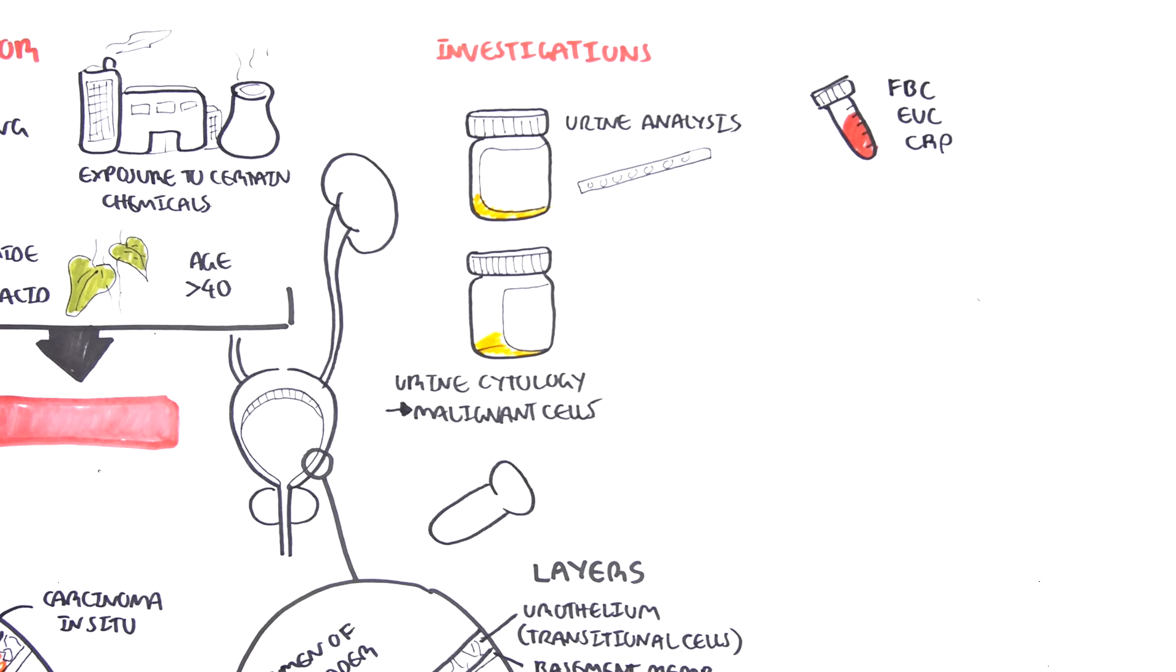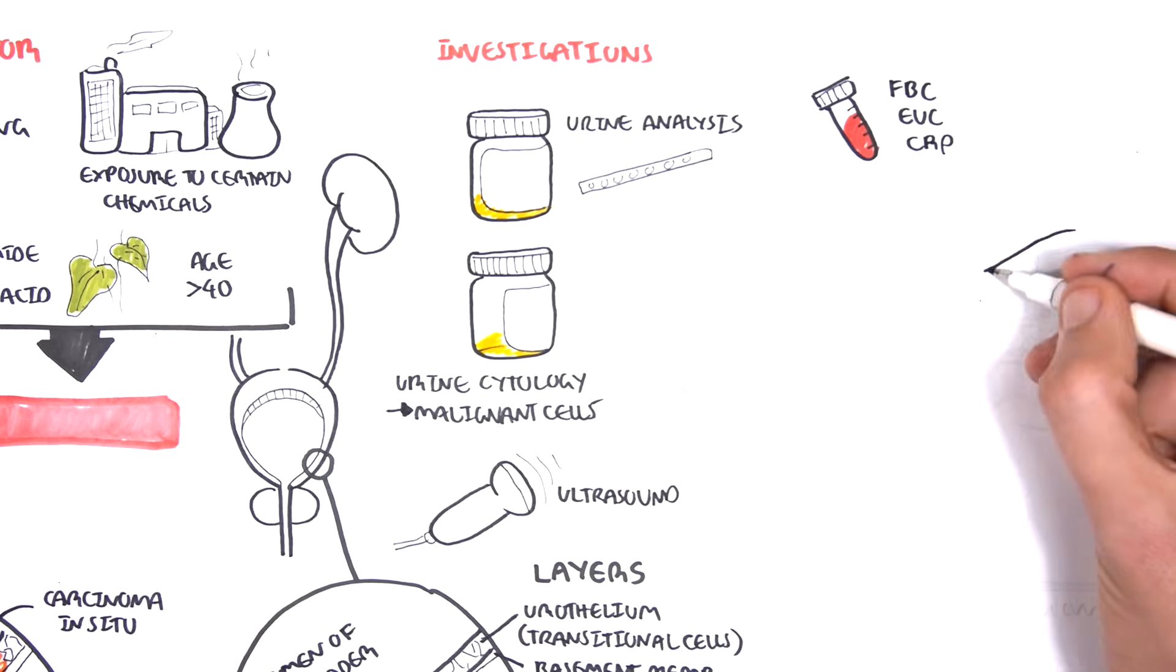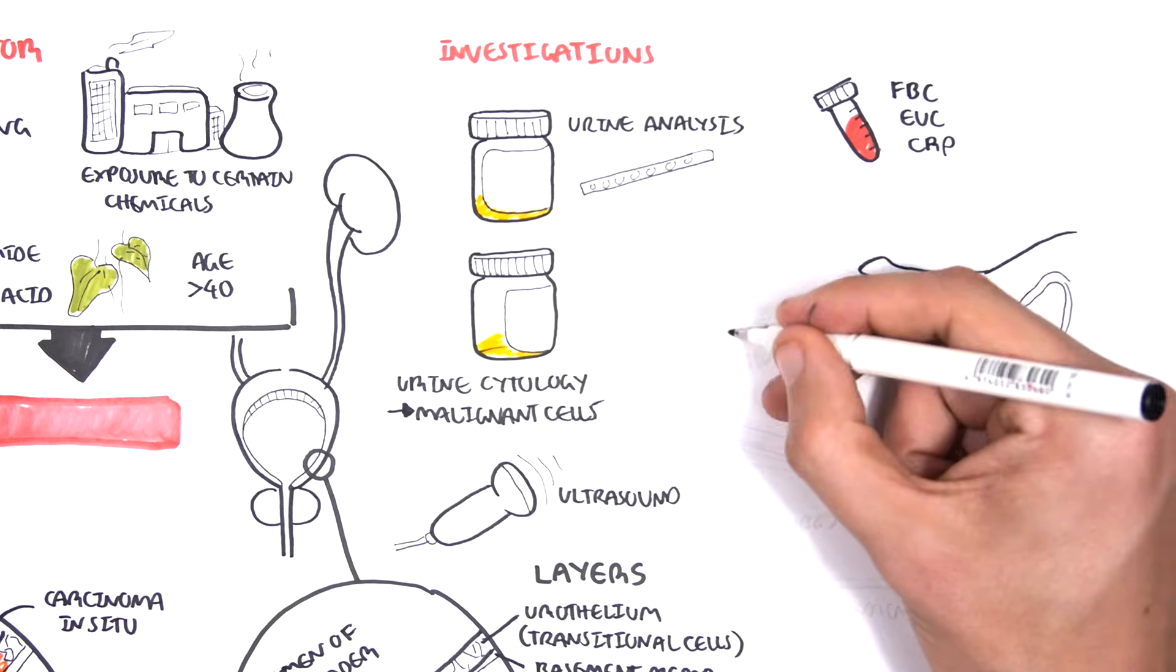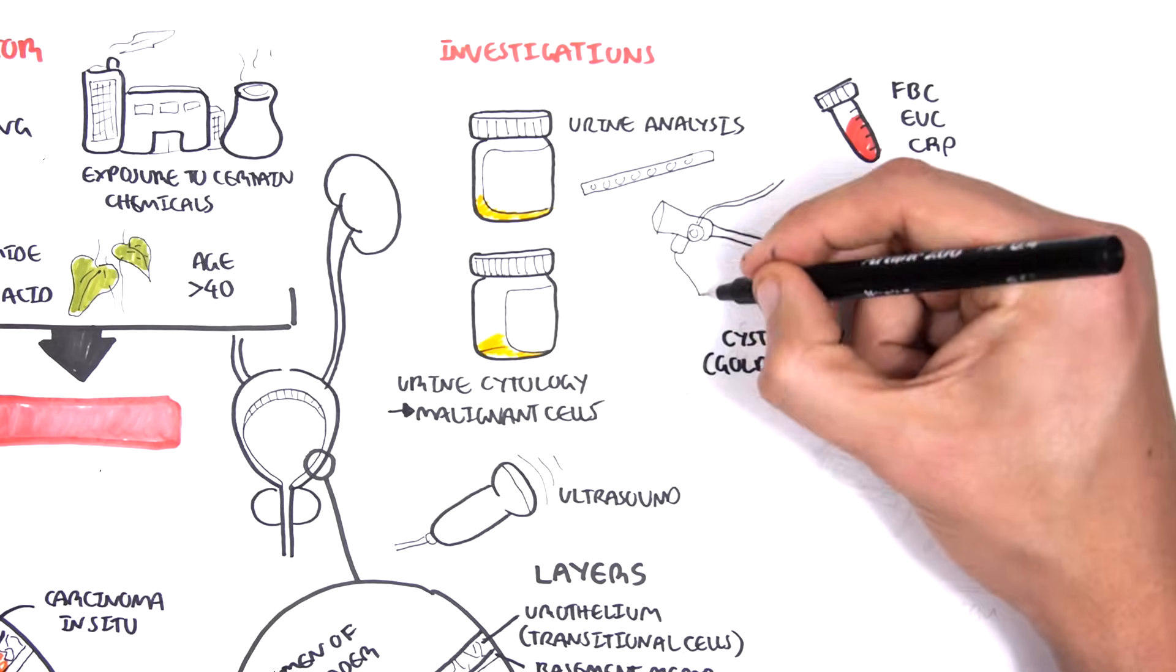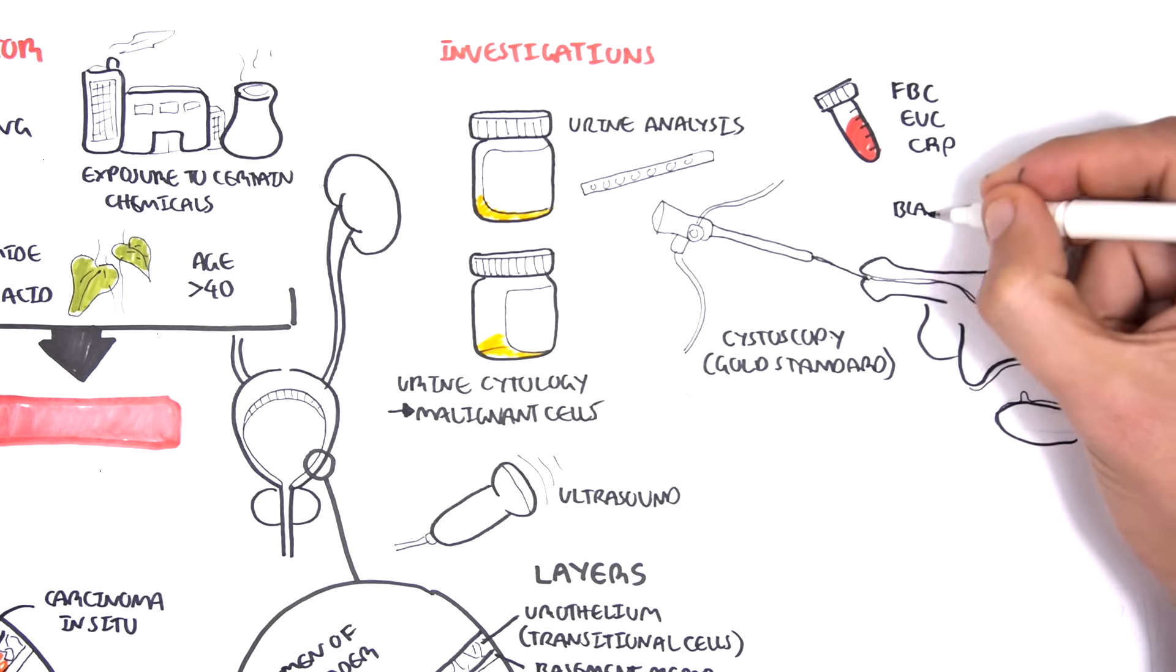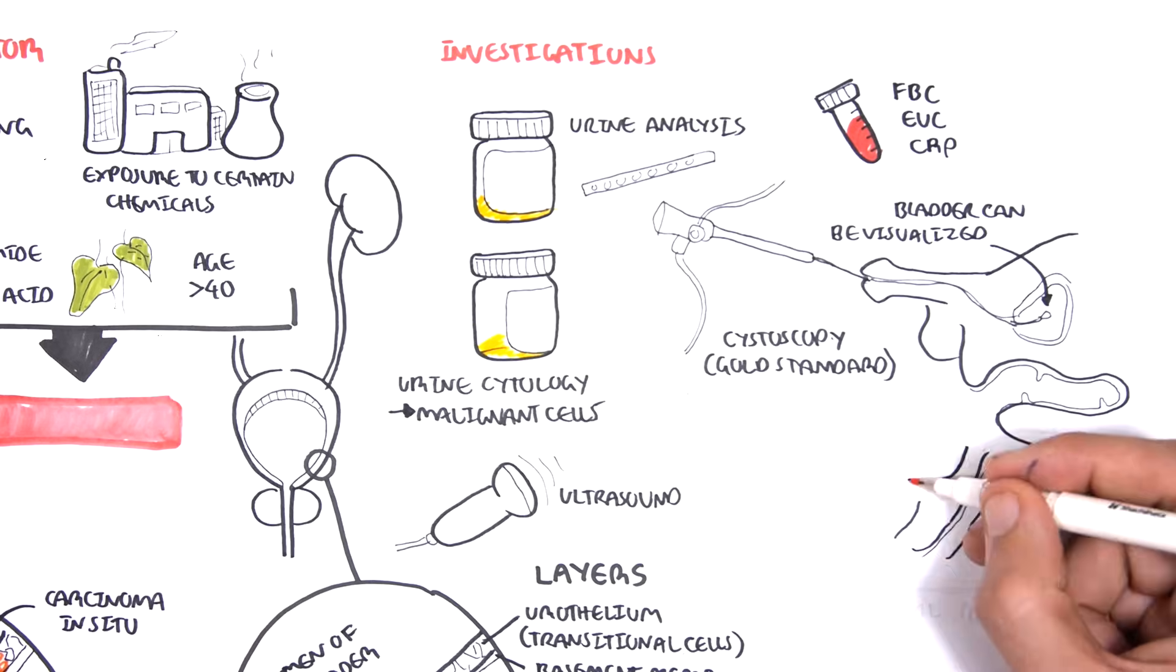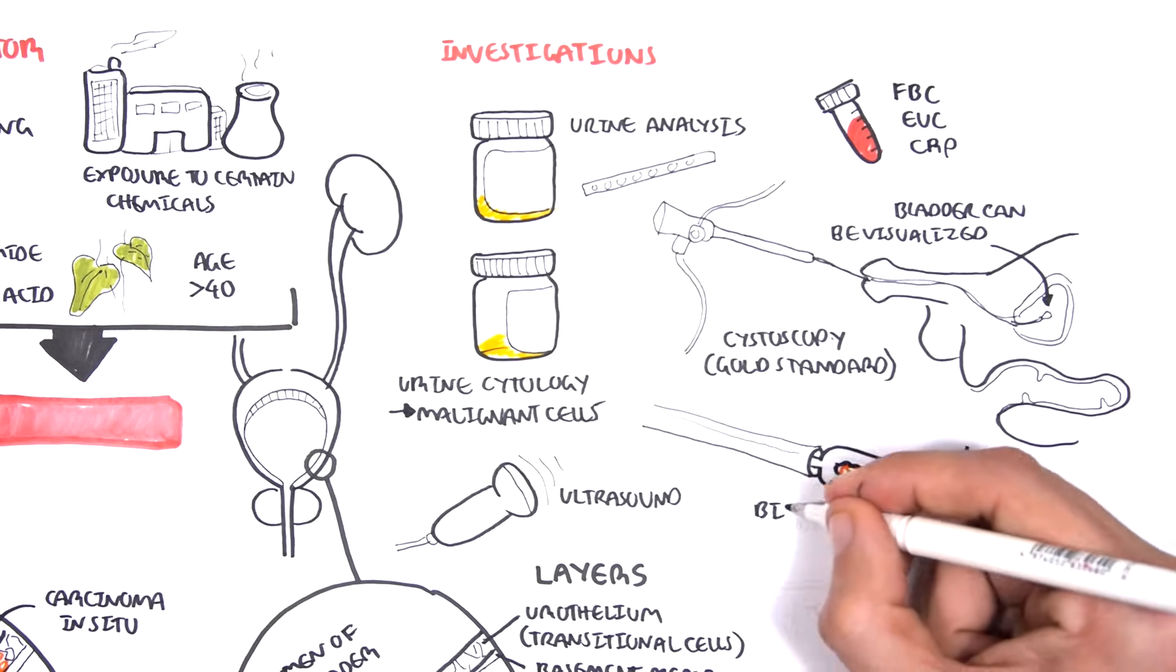The ultrasound of the bladder and kidney is a very good investigation for imaging. Finally, there is the invasive cystoscopy, which is gold standard actually, and this is where the bladder can be visualized from within. So you can see the urothelial layer, and also with this, a biopsy can be performed of the growth of the tumor, and this can be subsequently examined.